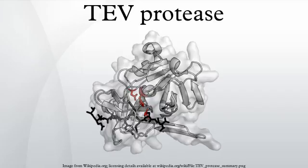The substrate is held as a beta-sheet, forming an antiparallel interaction with the cleft between the barrels and a parallel interaction with the C-terminal tail. The enzyme therefore forms a binding tunnel around the substrate, and side-chain interactions control specificity.